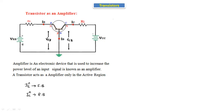For the collector junction, the positive terminal of the supply is given to the N-type collector terminal. Since positive is connected to N-type, the collector junction will be in reverse bias. So emitter junction is forward biased and collector junction is reverse biased — hence this transistor is in the active region.